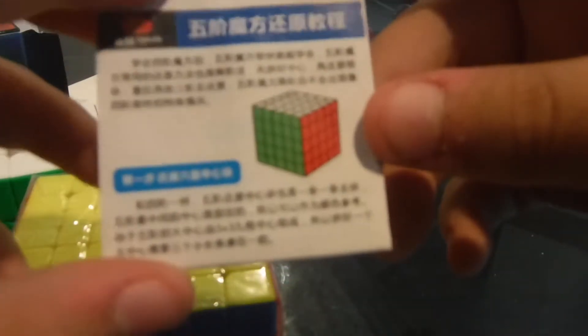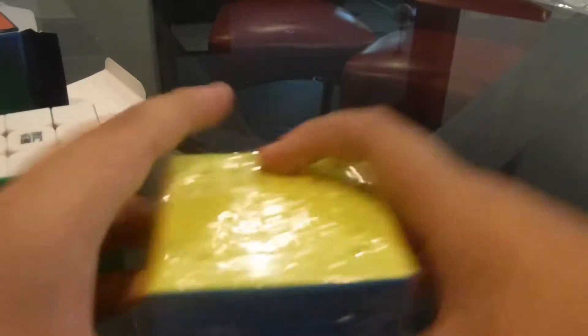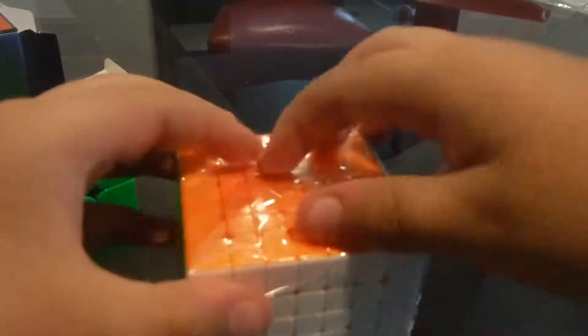Again, this instruction manual... wait, is that? Wait, I need to count this. This is a 5x5. This is a 5x5. They're lying. This is a 5x5, you can count it. But anyways, into the puzzle. Here we go.